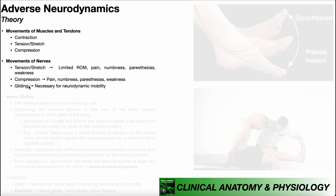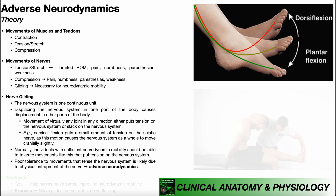Nerves can also glide, and nerve gliding is necessary for neurodynamic mobility. The nervous system is one continuous unit. Up in the skull we have the brain. Descending from that down through the spinal canal we have the spinal cord, which goes all the way down to about L1 and L2 where we get the cauda equina. Coming off of this in various regions we have the cranial nerves and the spinal nerves, which ultimately form peripheral nerves like the sciatic nerve and the median nerve. Everything is one continuous unit.